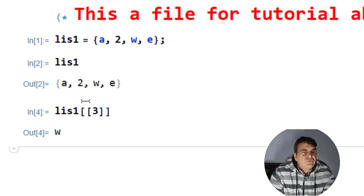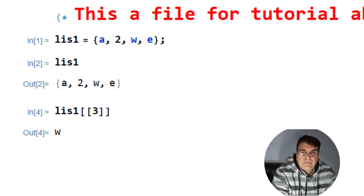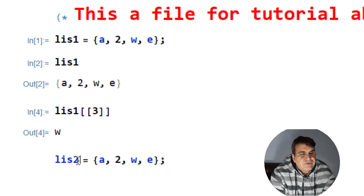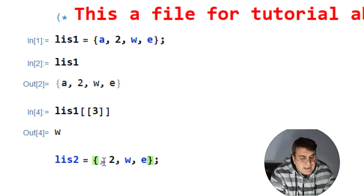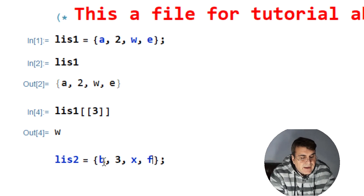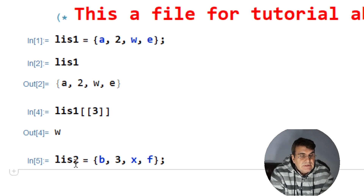Now let's do some operations. Before that, I want to construct another list to give us a broader view. I'll copy ls1, paste it, change the name to ls2, and change the elements to 'b', 3, 'x', and 'f'. So this is now another list with four elements. I run this and encode the information into ls2.